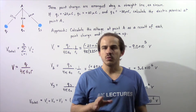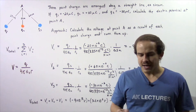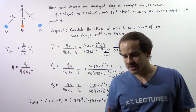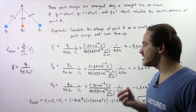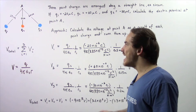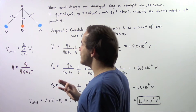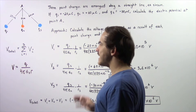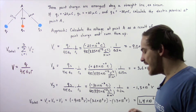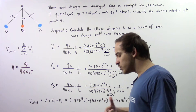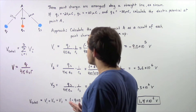In the previous lecture we were able to derive an equation that gives us the electric potential as a result of an electric charge that is assumed to be stationary and is assumed to be a point charge. So now we're going to apply that result.